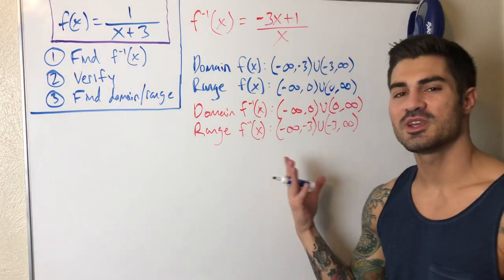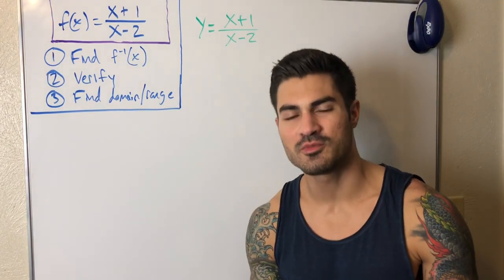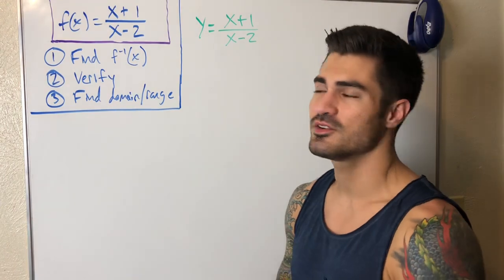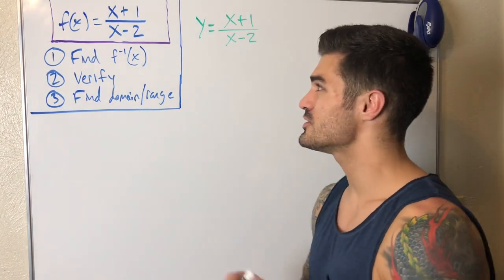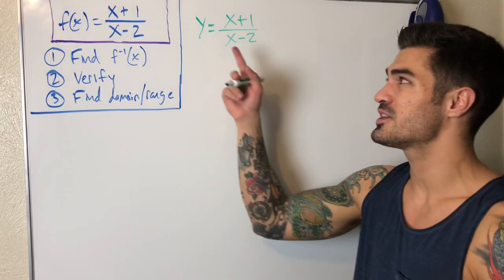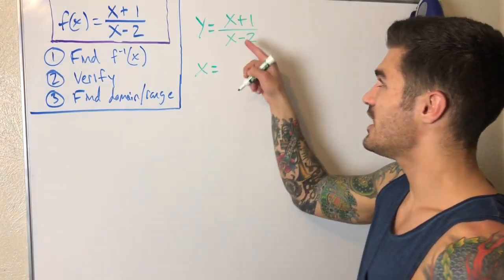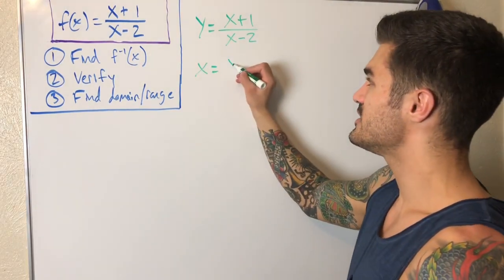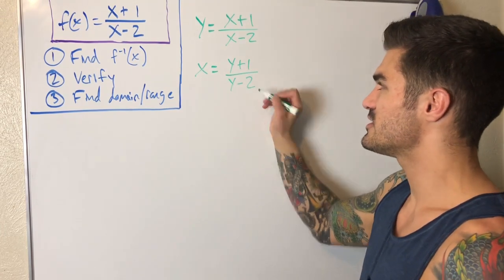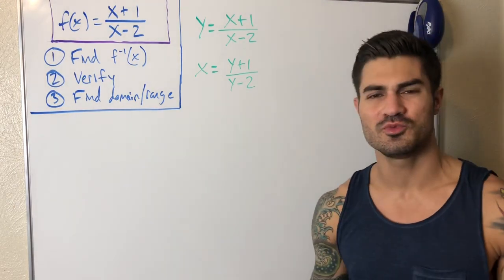Alright, second example — pause and try on your own. We'll find the inverse. I replace f(x) with y, then swap x and y. Now there are actually two y's in the equation, which makes it a little tricky to solve for y — that's why I chose this example.